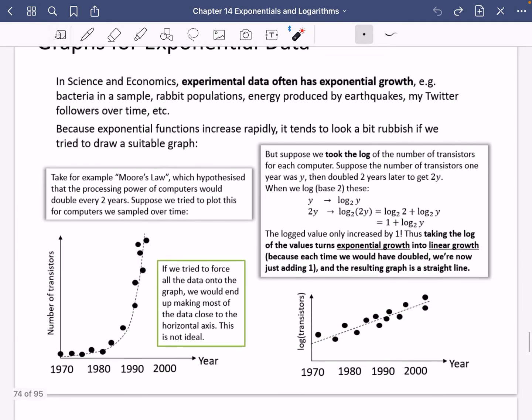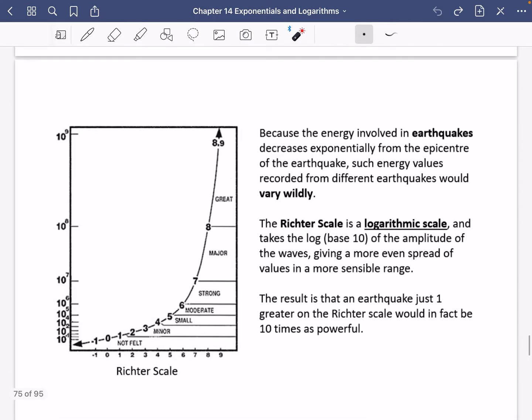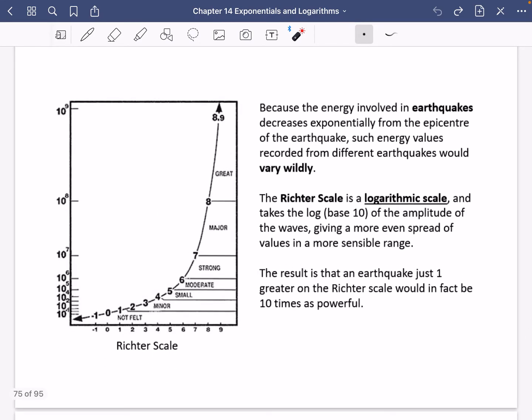This is used in so many different ways. It's used to do in the energies to do with earthquakes. So what I've got here, it says because the energy involved in earthquakes decreases exponentially from the epicentre of the earthquake, such energy values recorded from different earthquakes would vary wildly. So there's this exponential idea of earthquakes that means that we get this really big variation in the energy values that are recorded. So you've probably heard of the Richter scale. The Richter scale is actually a logarithmic scale, and it takes the log base 10 of the amplitude of the waves, giving a more even spread of values in a more sensible range.